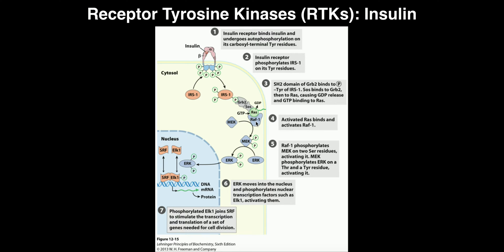Essentially, it's like the foot bone connected to the ankle bone, connected to the shin bone, and so on — a chain of proteins that are connected and become activated. The chain is: IRS-1 → GRB2 → SOS → RAS → RAF-1. The whole goal of this chain is to activate RAF-1, which is a kinase — the first important kinase in this chain. RAF-1 can then phosphorylate another protein.